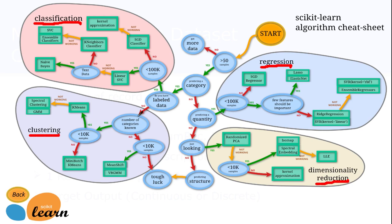If you have data available but no labels associated with any records, you need to go towards the unsupervised way of learning. Algorithms like k-means clustering, spectral clustering, GMM clustering, mean shift clustering, and mini-batch k-means clustering have been implemented inside the sklearn library.